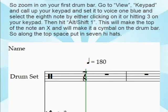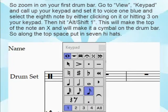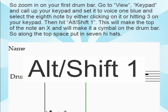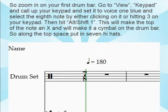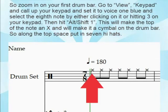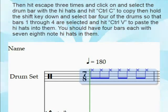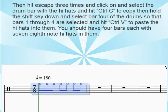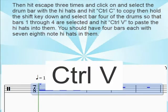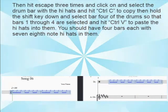Zoom in on your first drum bar. Go to View Keypad, call up your keypad, set it to Voice 1 Blue, and select the eighth note by hitting 3 on your keypad. Then hit Alt+Shift+1 to make the top of the note an X, making it a hi-hat symbol. Put in seven hi-hats along the top space. Then hit Escape three times, select the drum bar with the hi-hats, and hit Ctrl+C to copy. Hold the Shift key and select bar four of the drums, then hit Ctrl+V to paste. You should have four bars each with seven eighth-note hi-hats.